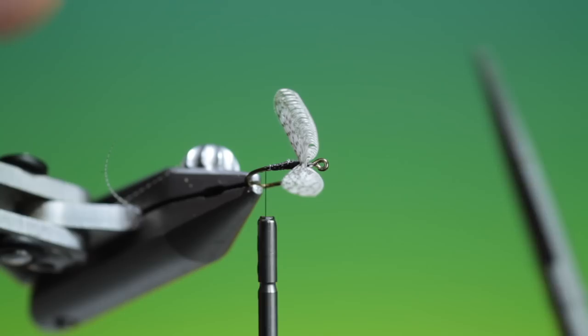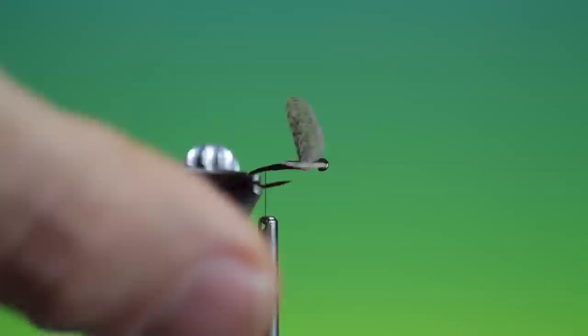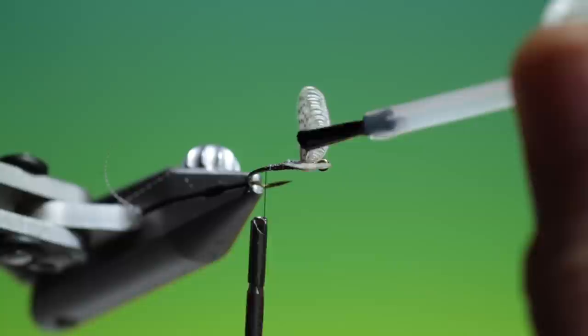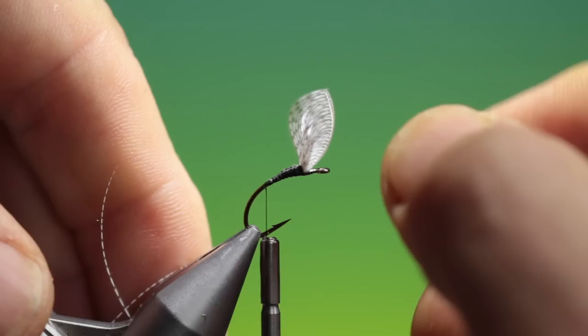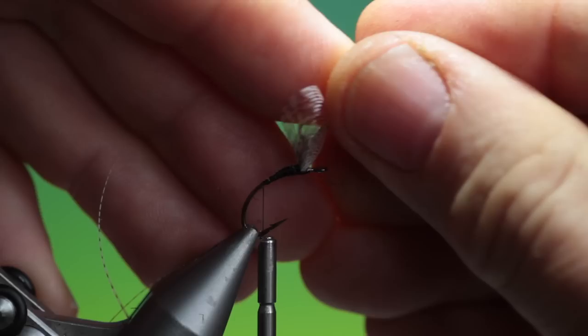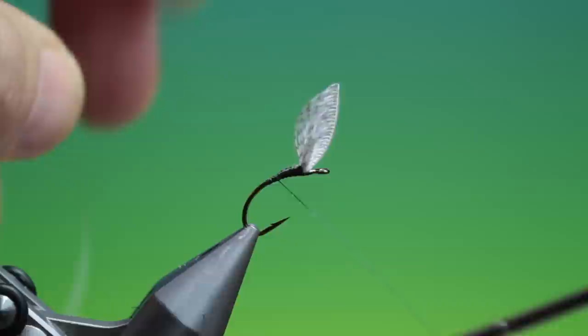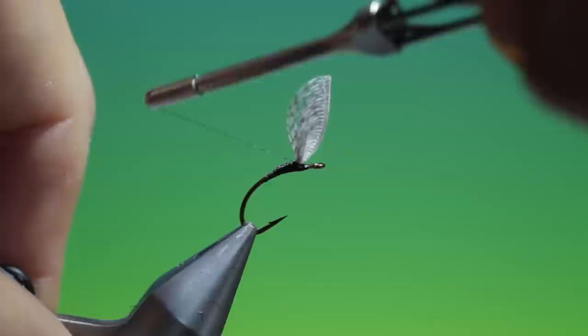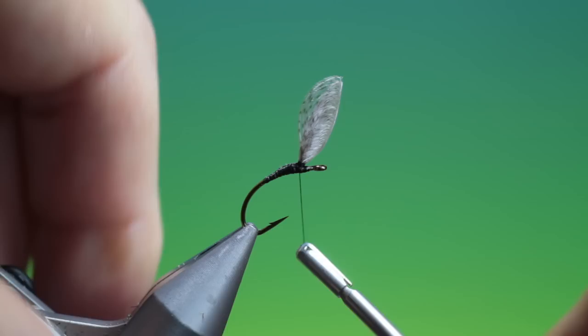You can just position those later. But what I like to do now is just take a little drop of varnish right on the wing base. And we can position them a little better. Then we go back up here. And we go around the wing base. Like you would a parachute post. Keep them in position.